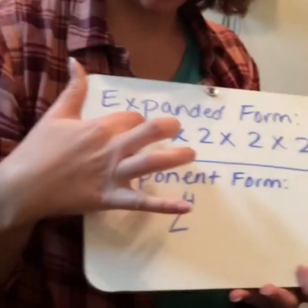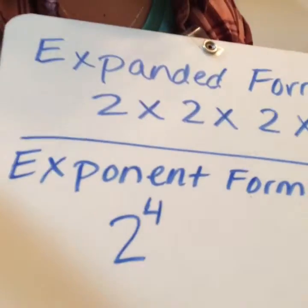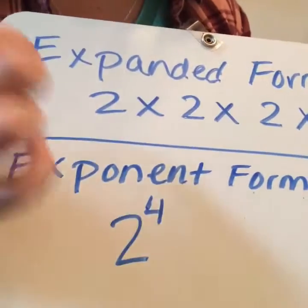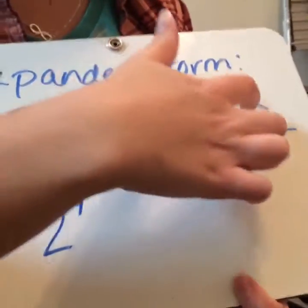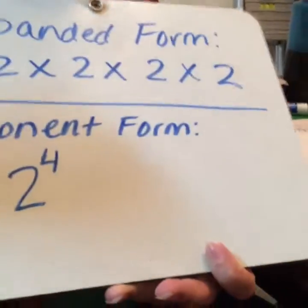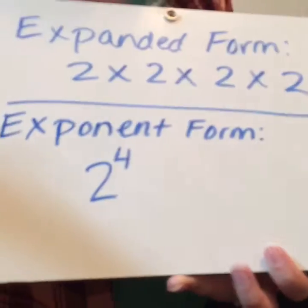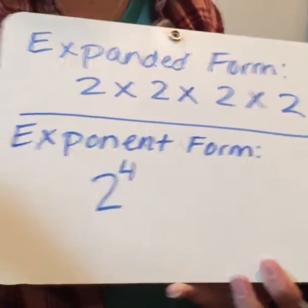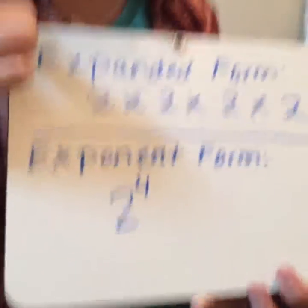So for example, I am looking at the number represented here by 2 times 2 times 2 times 2. So what number is this? Well, 2 times 2 is 4, and 2 times 2 is 4, and 4 times 4 is 16. So if I want to break down 16 into a small number, I can write it out like this in expanded form.